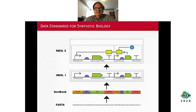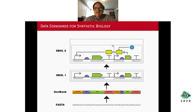In SBOL version two we added the ability to express other types of components, not just DNA components, because in a genetic design you'll have things like small molecules and proteins that are part of your design as well. We want to indicate things like this small molecule represses this protein, or this coding sequence codes for this protein which then is used to repress this promoter.